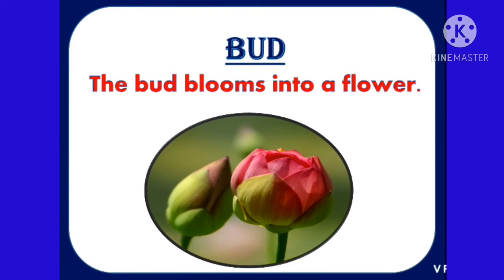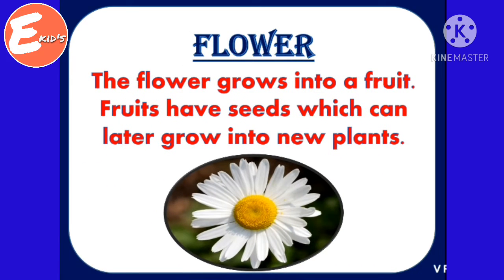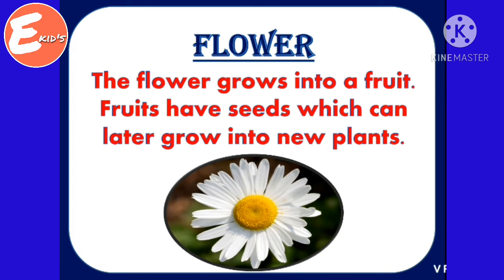Bud. The bud blooms into a flower. Flower. The flower grows into a fruit. Fruits have seeds which can later grow into new plants.